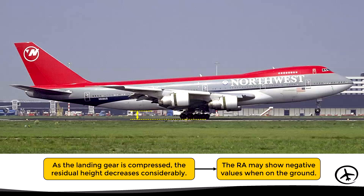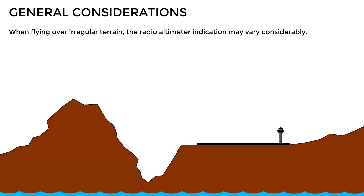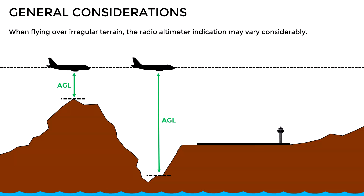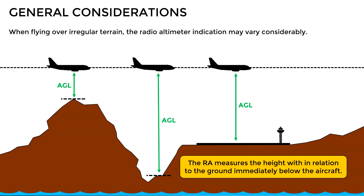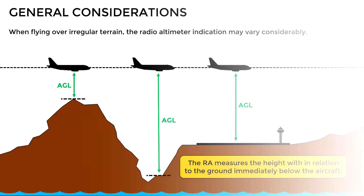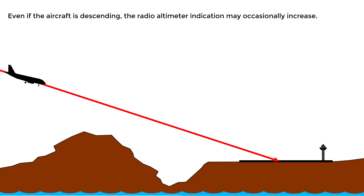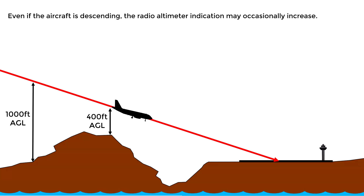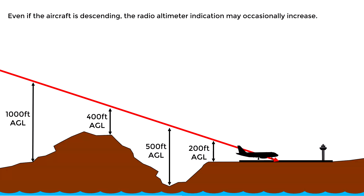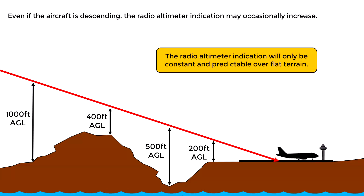There are some other considerations to take into account when using the radio altimeter. For example, when flying over irregular terrain, the radio altimeter indication may vary considerably. Even if the aircraft is flying leveled at a constant altitude, the height above the ground indicated by the radio altimeter is constantly changing because of the irregularities of the terrain. Even if the aircraft is descending, the radio altimeter indication may occasionally increase. For example, an aircraft approaching to land at 1000 feet may see the indication decrease to 400 feet over a mountain, then increase to 500 feet over a valley, despite actually descending. Therefore, the radio altimeter indication will only be constant and predictable over flat terrain.